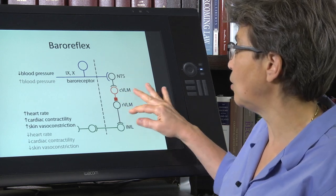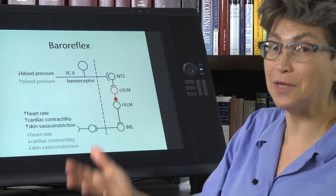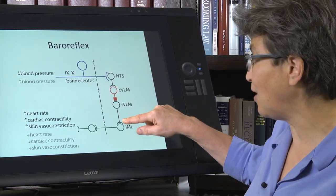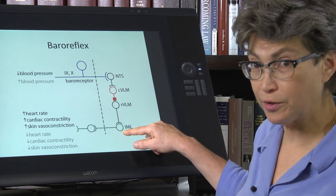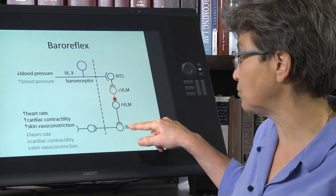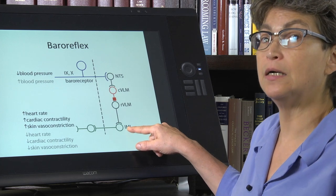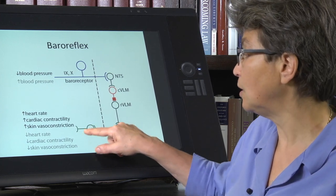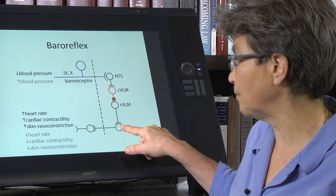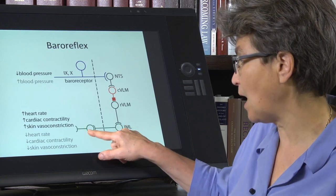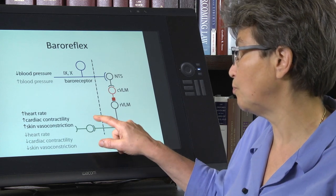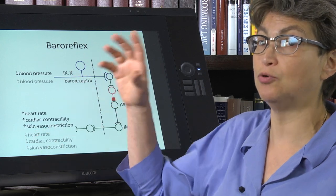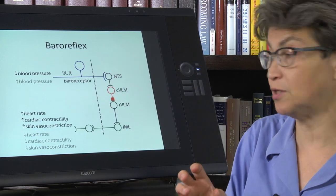And then an area described as rostroventral lateral medulla projects back down to the spinal cord, to the intermediolateral cell column in the thoracic cord. And from there, sends preganglionic axons out to ganglia that then send postganglionic fibers out to the vessels in the skin.